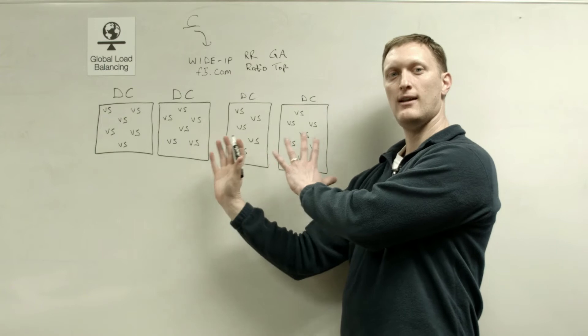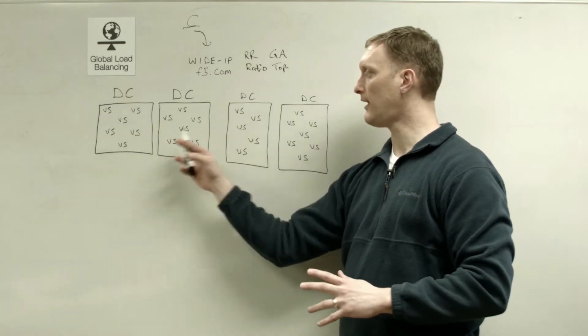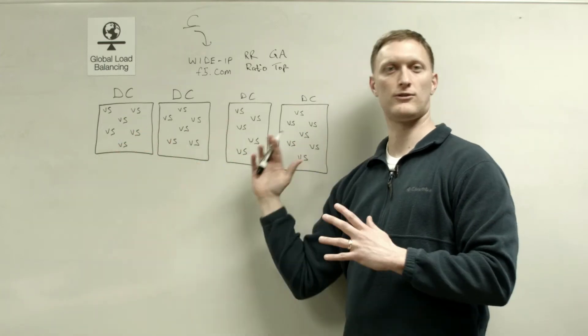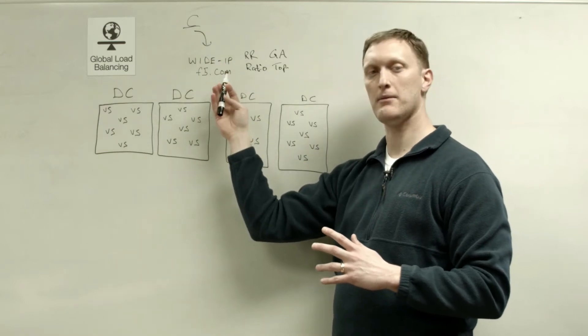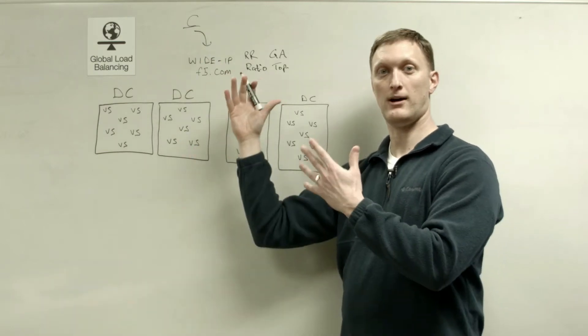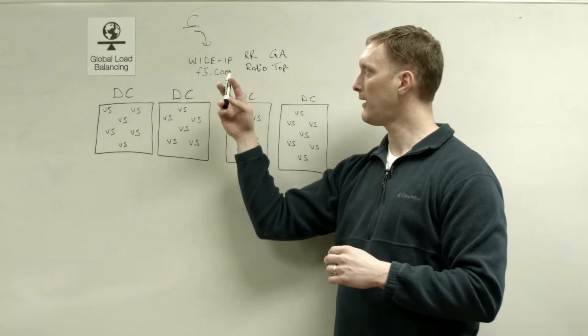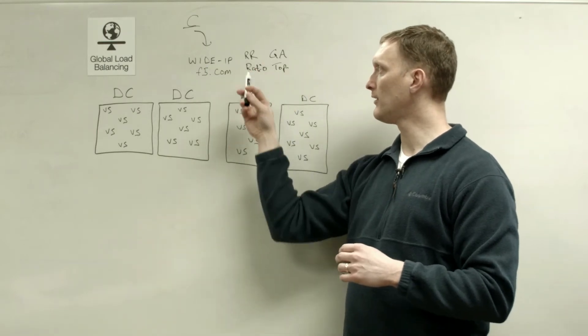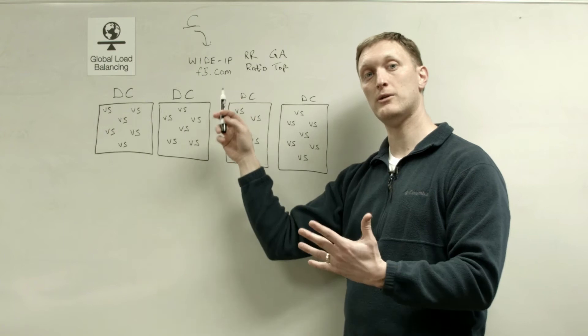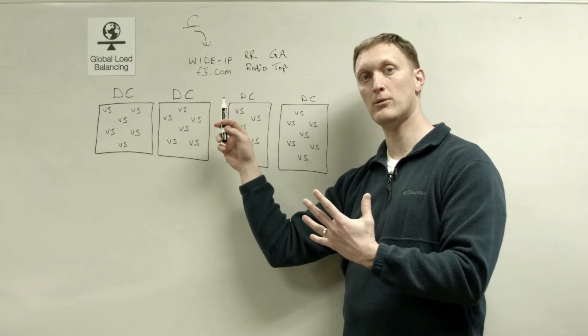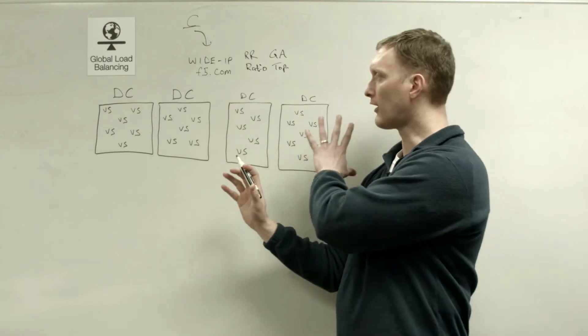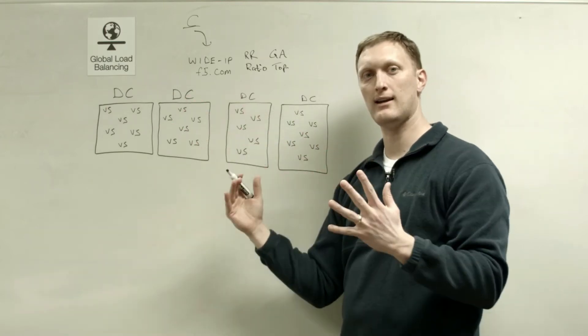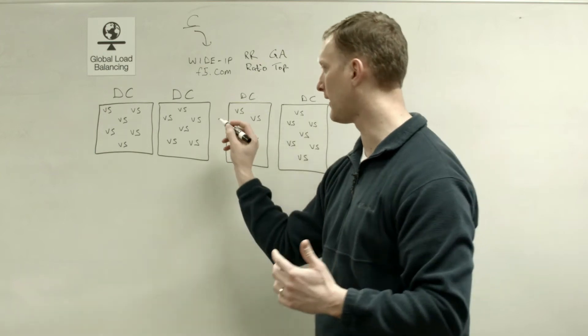All right, so I have this drawing up here with these four data centers and all these virtual servers. And so when a client requests this wide IP, the question is, what response is going to go back? So again, at the wide IP level, we're going to use one of these four load balancing algorithms to figure out which pool, which wide IP pool we're going to select. So I'm going to draw a pool, actually maybe three pools here, across these four data centers to give you an idea of what some wide IP pools may look like.